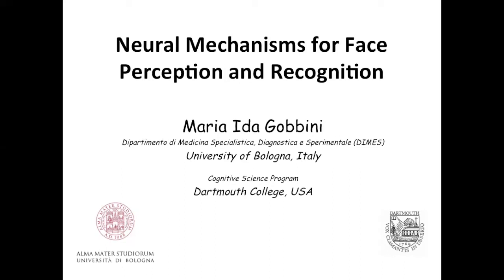To clarify why personally familiar faces are important as a category to better understand how the neural mechanism for face perception is organized, I usually make a parallel with the language system. To investigate the neural system for language we use the native language of participants, and similarly for understanding the face perception system the key is to probe the system with the category of faces it is tuned to, since most of us spend most of our day interacting with familiar individuals.